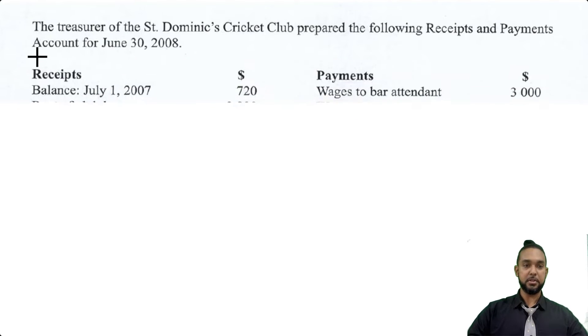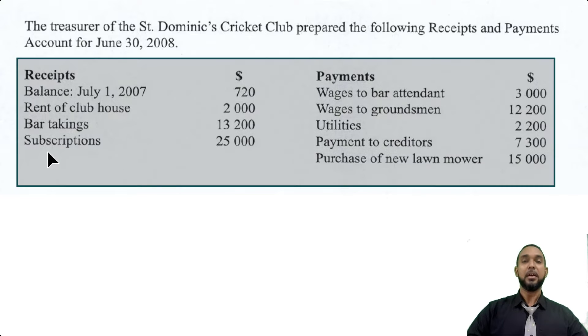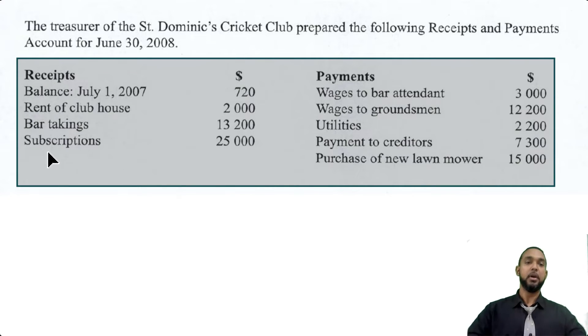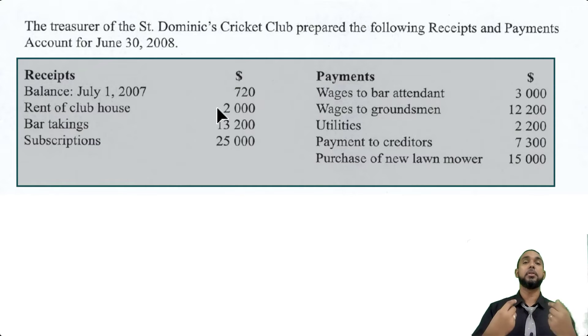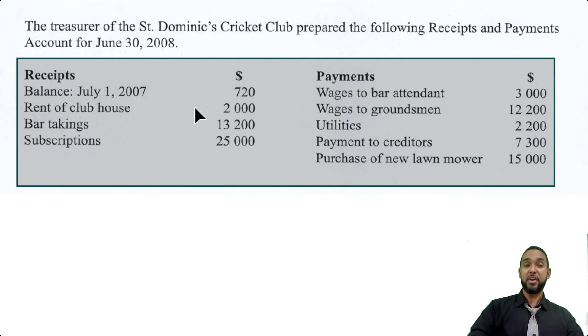They're telling us the treasurer of St. Dominic's Cricket Club prepared the following receipts and payments account for June 30th, 2008. A receipts and payments account is basically a cash book, but it's the non-profit organization name for a cash book, and there's only one column — there's no separate column for cash and bank. On the receipts side, money coming in on the debit side: balance at start $720, rent of clubhouse. Rent is normally an expense, but if we have a property and we rent it out, that's revenue to us.